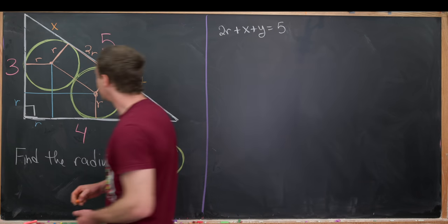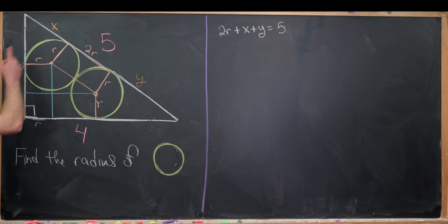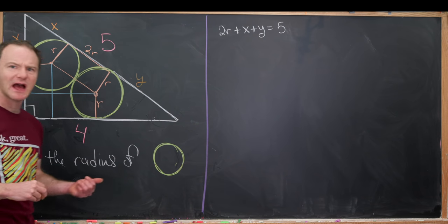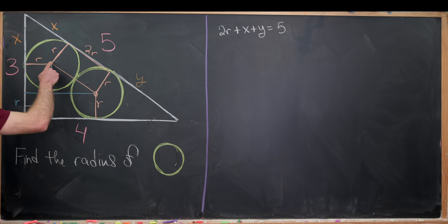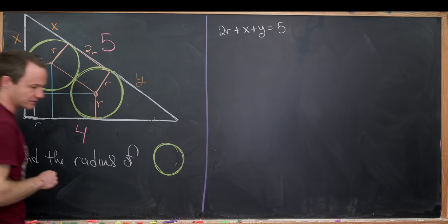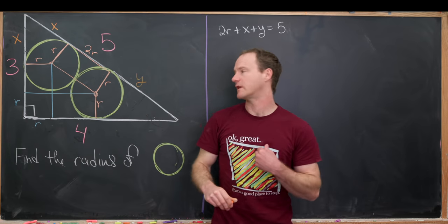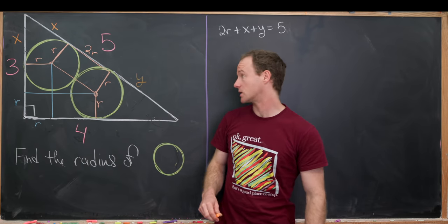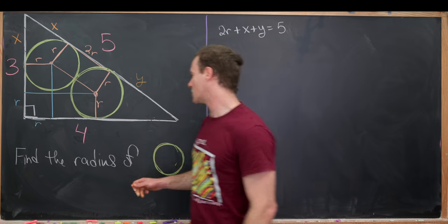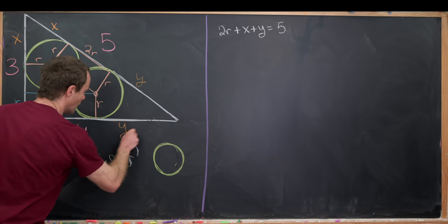But now we can use a fairly standard fact to say that this length right here is also x. So I'll add that in there. Now maybe how could we do that? Well, we could complete another set of triangles by linking this vertex here with this vertex here. And then we could show that those two triangles are congruent. Then we can do the same thing over here to get a length of y.